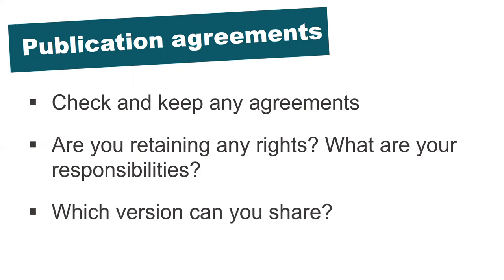The version researchers are typically permitted to share is known as the author accepted manuscript — the peer-reviewed version of a work which was accepted for publication but not yet copy-edited or typeset. Researchers need to make sure that the copyright transfer agreement and any funder mandates are compatible and that they're personally happy with the outcome. It's important to remember that this element of a publication agreement can be negotiated if the author isn't happy.